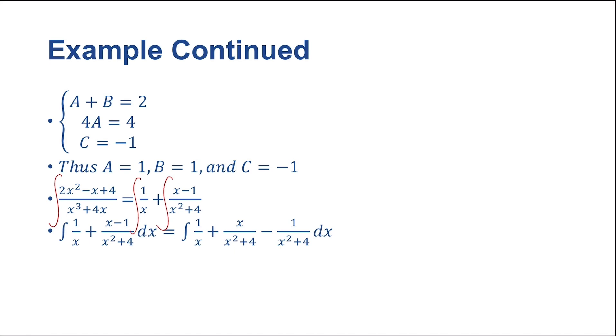Now we've got a problem. This guy looks like we could make it a little bit nicer. So let's try that. So what we are going to do is we are going to separate this fraction, and we're just going to make it separated into x over x squared plus 4 minus 1 over x squared plus 4. So we get the integral of 1 over x plus x over x squared plus 4 minus 1 over x squared plus 4 dx.